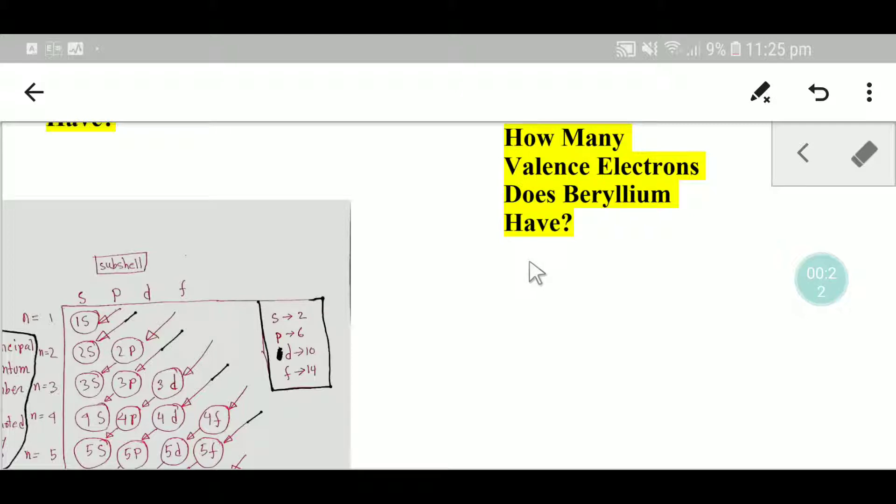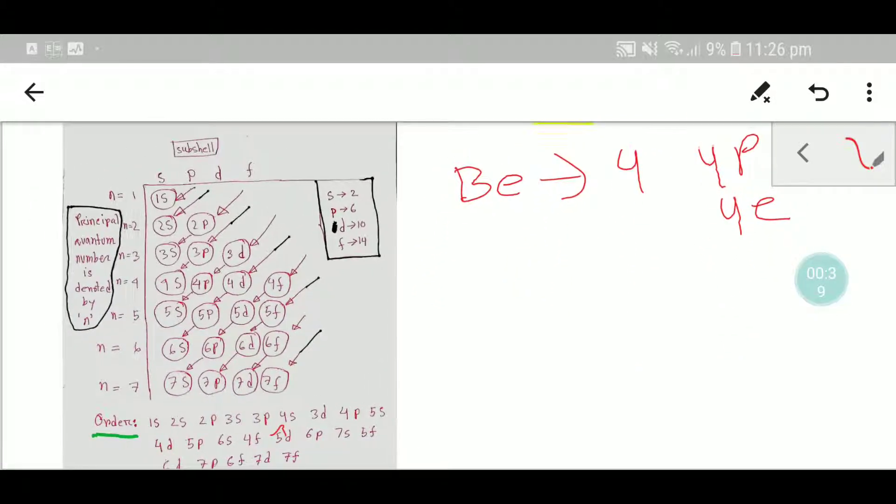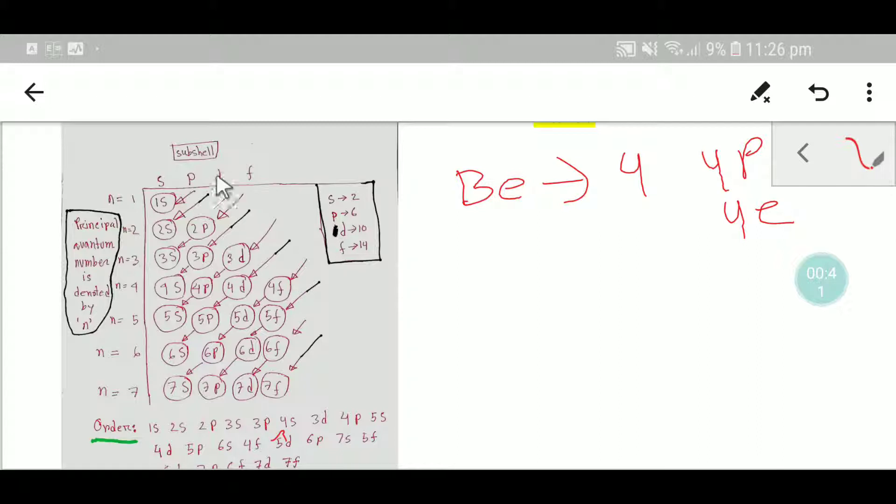From the periodic table we know that the symbol for beryllium is Be and its atomic number is 4. This means that beryllium has 4 protons and 4 electrons. To find out the electronic configuration of beryllium we will use this diagram.